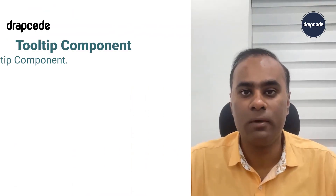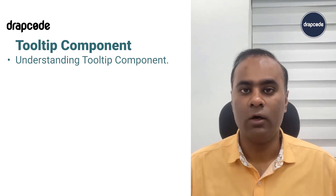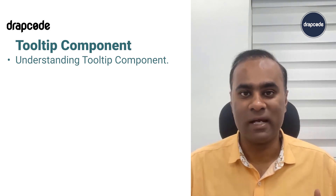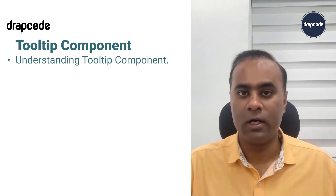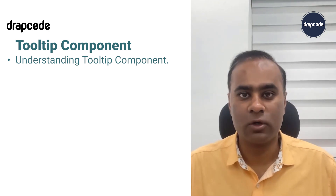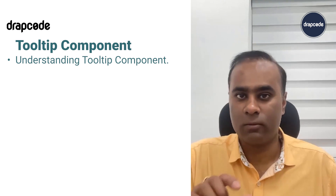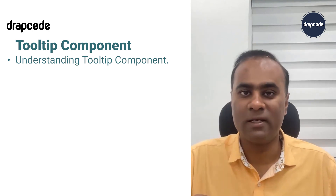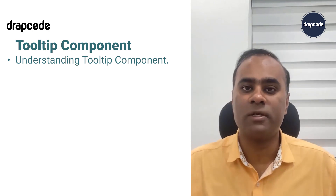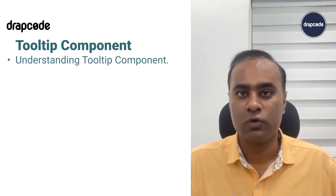Hi guys, this is Vishal here from Drapbook. In this video we will understand the tooltip component — how to implement tooltip on any component, whether it's dynamic, static, non-datatable, data group, and all those things. A tooltip is a component where you hover or click on something and it opens up a small pop-up, so that you can provide more information to the user about what that particular thing is all about.